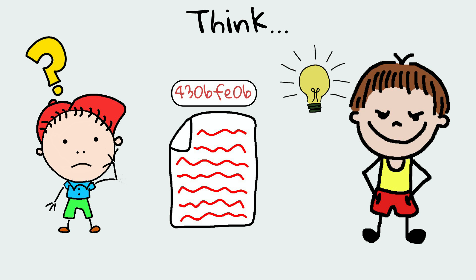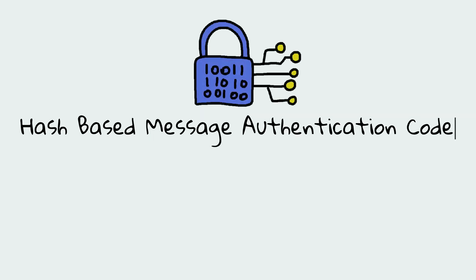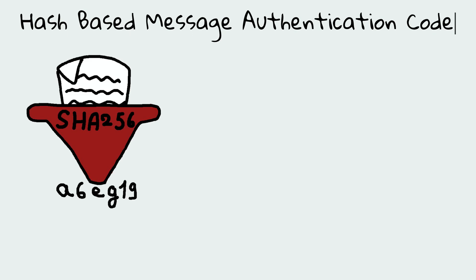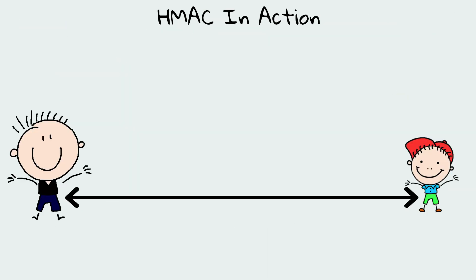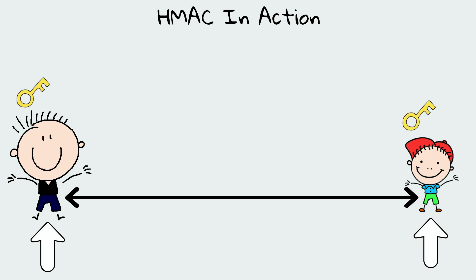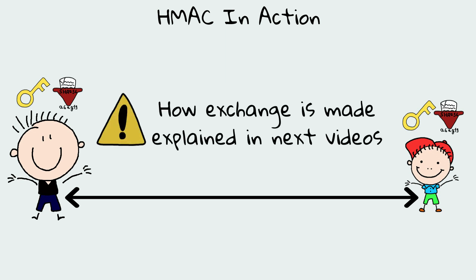Here comes the role of HMAC. HMAC stands for Hash-Based Message Authentication Code. It is a cryptographic authentication technique that uses a hash function and a secret key. For HMAC to work, both JP and Joe should agree on a shared secret and a hash function. In the TLS handshake video, you will understand how the hash function is decided and how the secret key is generated through a key exchange protocol.